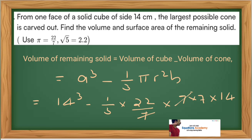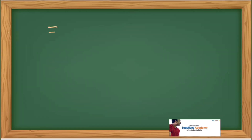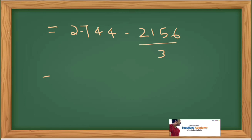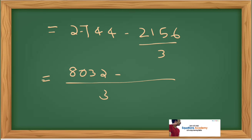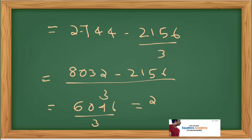We cancel 7 with 7. So 14 cubed is 2744, minus 22 into 7 into 14 which equals 2156, divided by 3. Taking LCM of 3: 2744 into 3 is 8032, minus 2156 equals 6076. So 6076 divided by 3 equals 2025.33 centimeters cubed. This is the volume of the remaining solid.